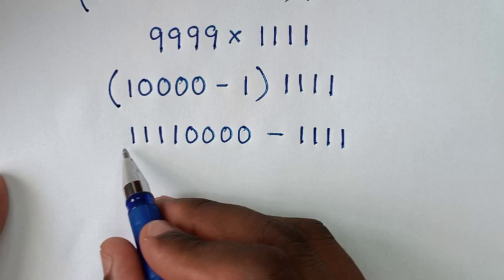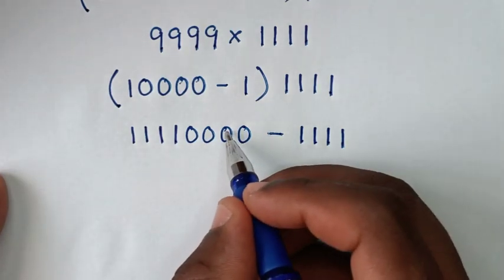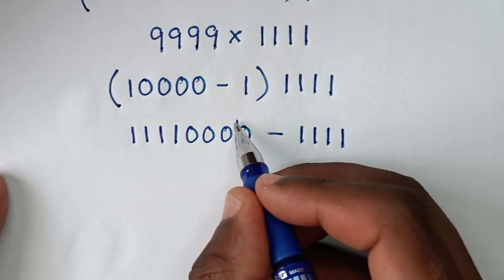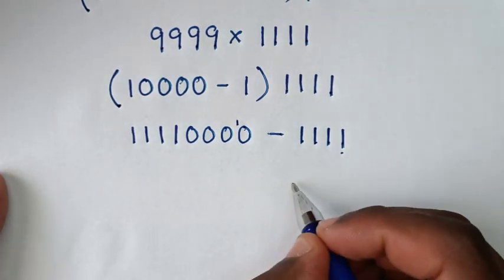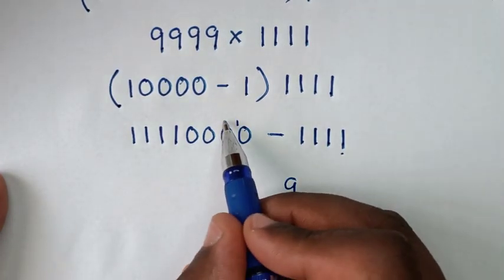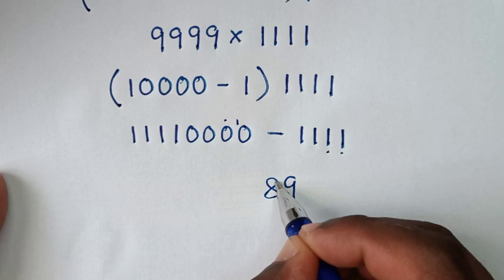Then in the next step we subtract: 11110000 minus 1111. We borrow 1, so 10 minus 1 is 9. Then 9 minus 1 is 8.